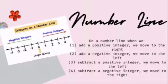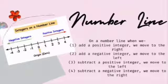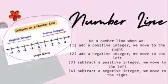Let's move on to the number line. There are positive numbers, negative numbers, and zero on a number line. Here is zero, here are the positive numbers, and here are the negative numbers.